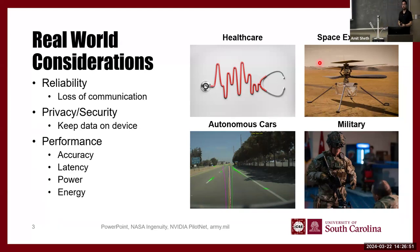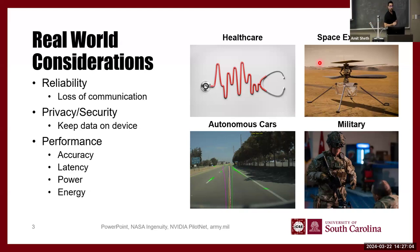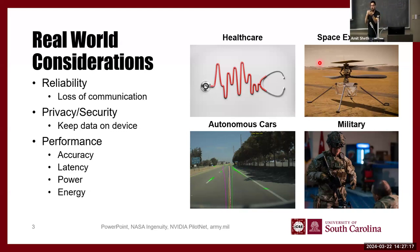Until recently, devices like smartphones and smartwatches were simply input-output devices. A few years ago, if you asked Siri a query, that query was sent to a server somewhere on the west coast, processed there, and the result came back to your phone. Your phone was just doing input and output — send data to the server through the network, get it back, then show it to the user.